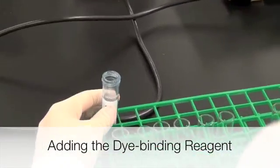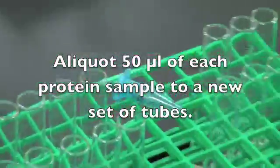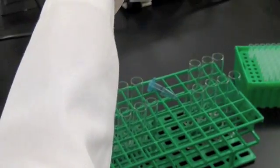Once all the dilutions of the standards and unknown are made, you are ready to add Coomassie dye to uniform volume aliquots of the standards and unknown.